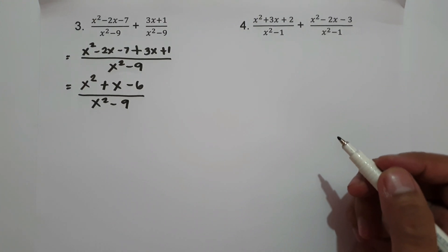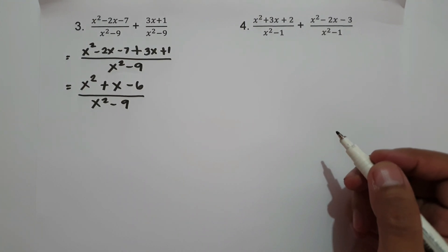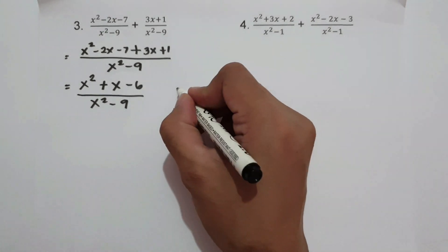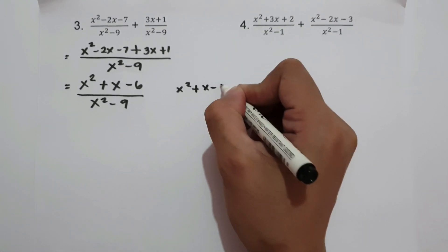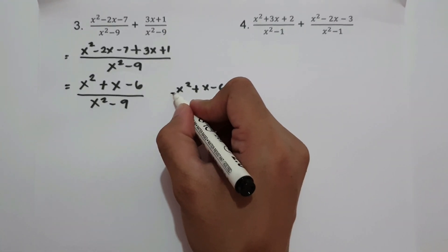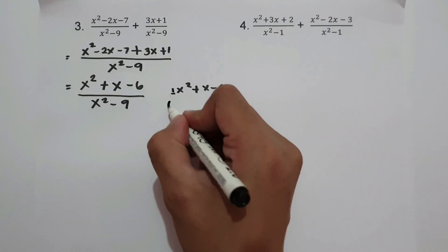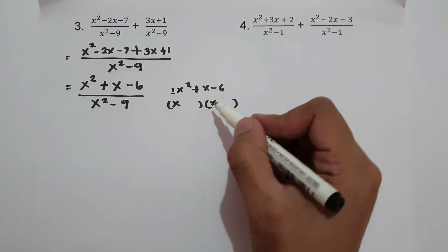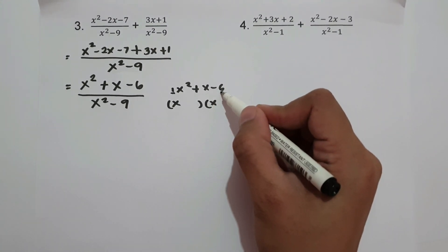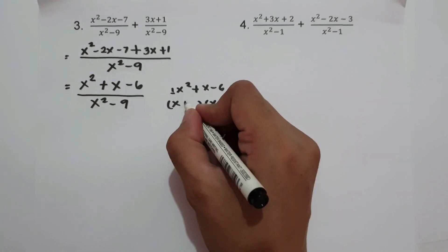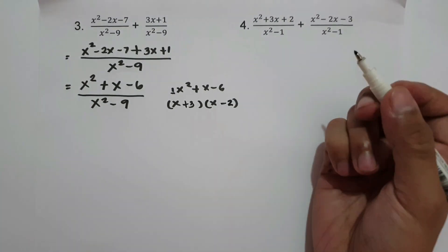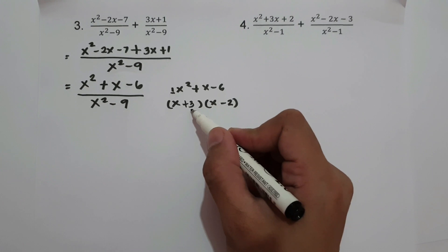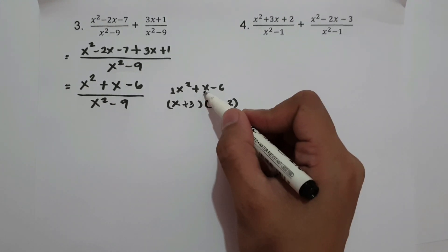Now, to simplify our answer, we find the factors of the numerator and denominator. For x squared plus x minus 6: since the value of a is 1, we find two numbers that multiply to negative 6 and add to positive 1. That is 3 and negative 2 — because 3 times negative 2 is negative 6, and 3 plus negative 2 is positive 1.